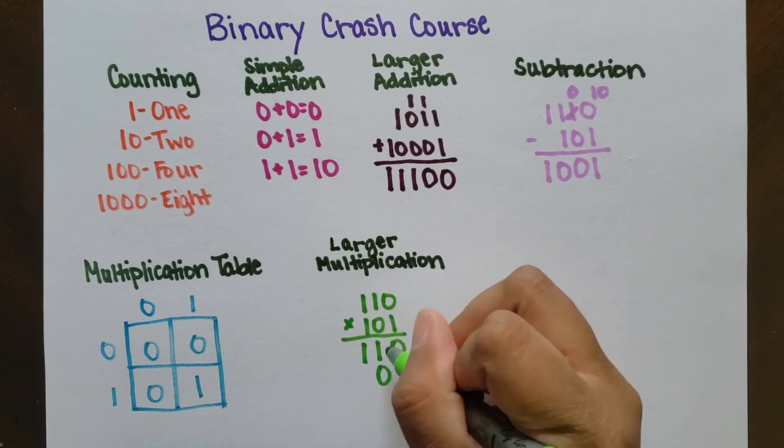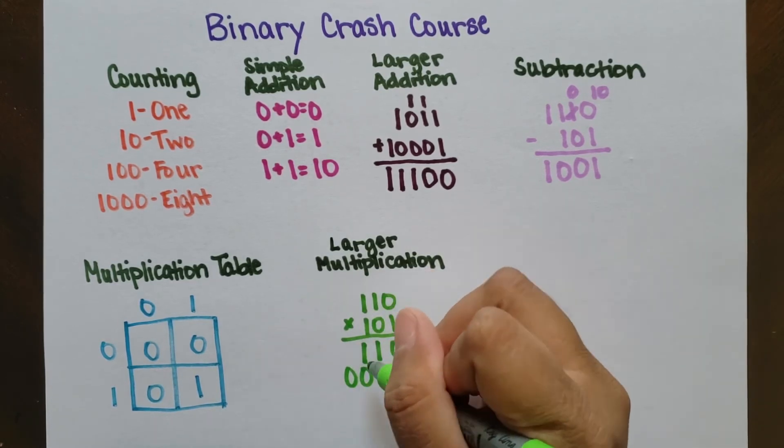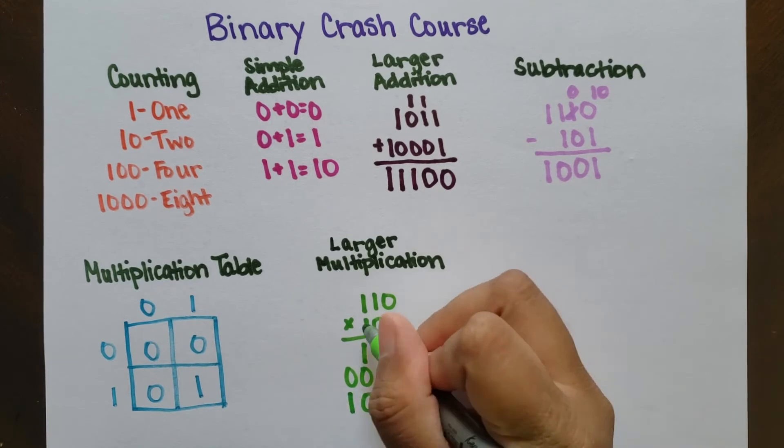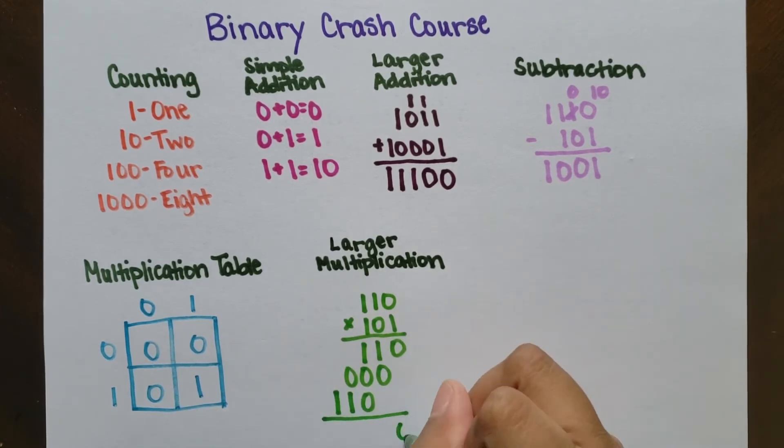When we move over, we have 0 times the top, which is just 0, and then we end again with just 1 times the top, which is 110 again. We add these numbers together and we get 11110, or 30.